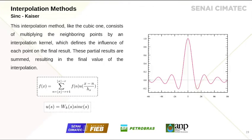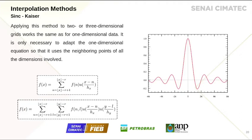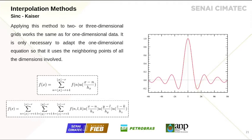The sinc-Kaiser interpolation method is quite similar to the cubic one, because it also consists of multiplying the neighboring points by an interpolation kernel. The main difference is in the number of neighboring points — while the cubic one uses four points, here we use eight neighboring points for each dimension. The kernel is also different; it's no longer a cubic convolution kernel, but a kernel containing the Kaiser window and the sinc function. For a two-dimensional grid we adapt this equation, and for a three-dimensional sinc-Kaiser interpolation, we have this corresponding equation.